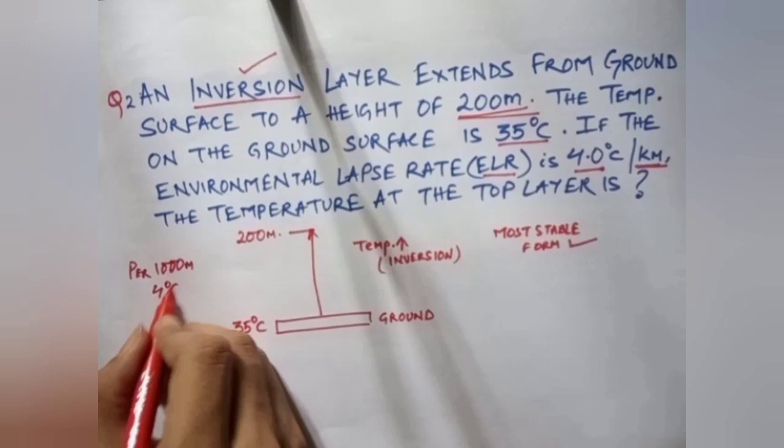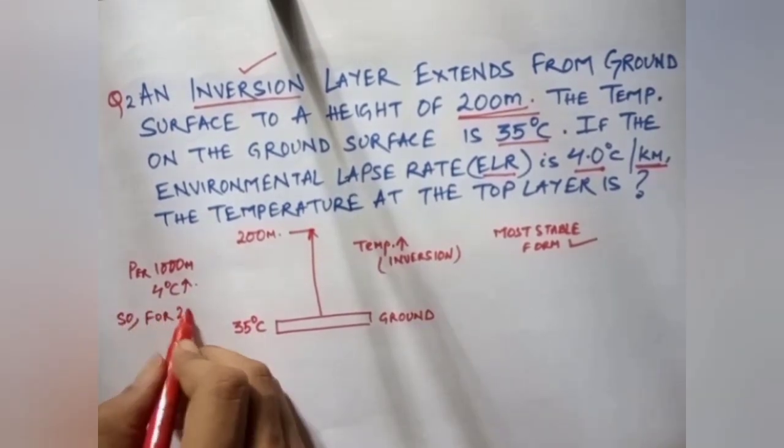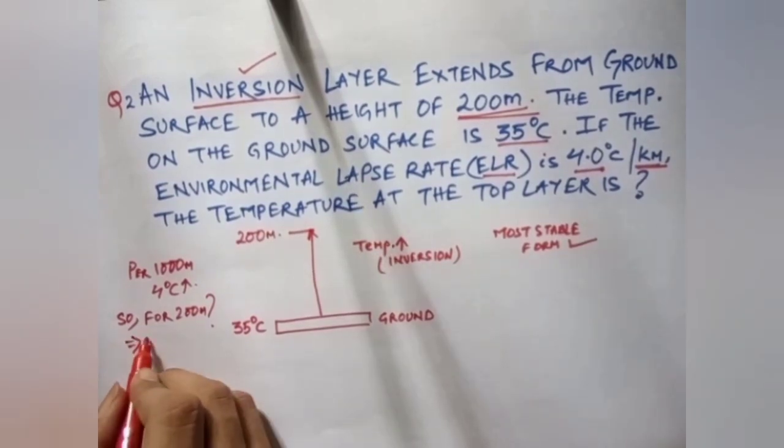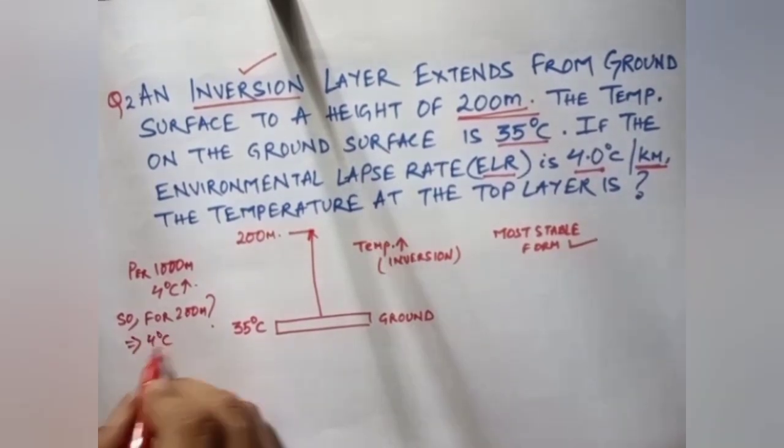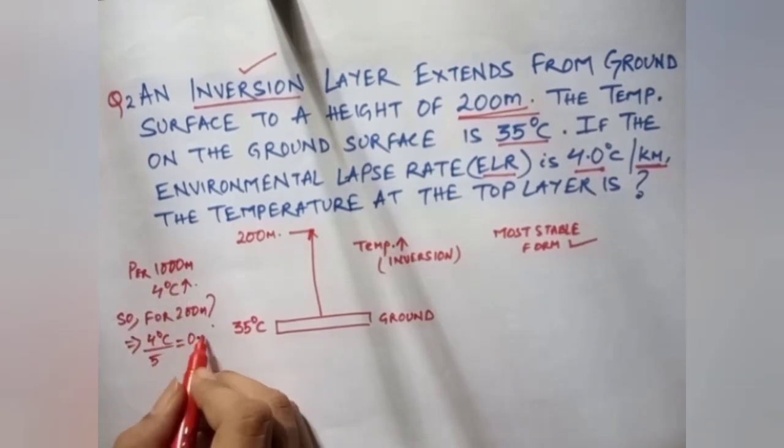So per thousand meter, that is per kilometer, the temperature increases 4 degree celsius as it is inversion. So for 200 meter that is in the question, how much will be the temperature increase? It will be 4 degree celsius divided by 5, because thousand divided by 5 is 200.